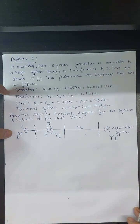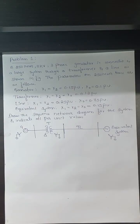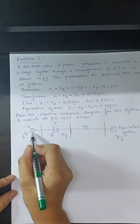For this problem, we do not need to calculate any reactances for the generator, transformer, transmission line, or equivalent circuit. The only thing we need to do is draw the sequence network, which consists of three parts: the positive sequence network, the negative sequence network, and the zero sequence network, with all quantities expressed in per unit.